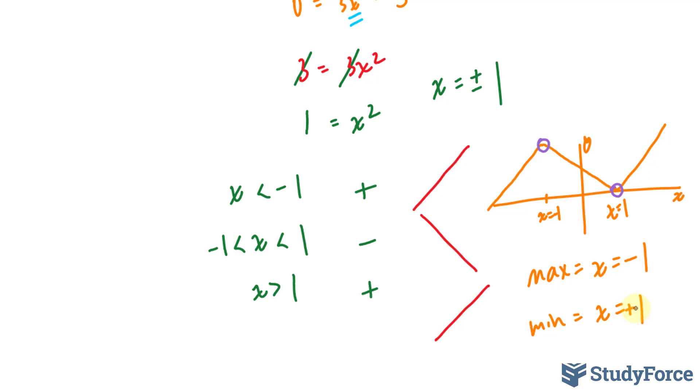Now just before I conclude, I want to say one more thing. If you want to find the y coordinate of the minimum and maximum points, you will substitute negative 1 and positive 1 into the original function.